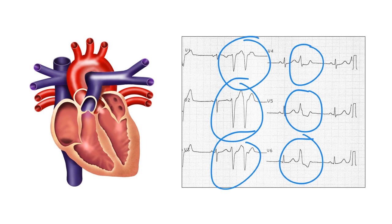If a ventricular ectopic beat arises in the right ventricle, then it will activate the right ventricle first before activating the left ventricle. This is a pattern of depolarisation that we see in left bundle branch block. So when a ventricular ectopic beat arises from the right ventricle, it will have a left bundle branch block morphology. Conversely, ventricular ectopic beats arising in the left ventricle will have a right bundle branch block morphology on the same principle. Looking at this ECG, the ventricular ectopic beats have a left bundle branch block morphology, meaning these ventricular ectopics are arising in the right ventricle.